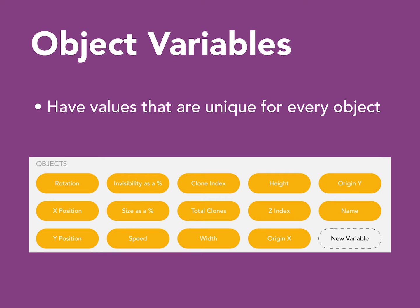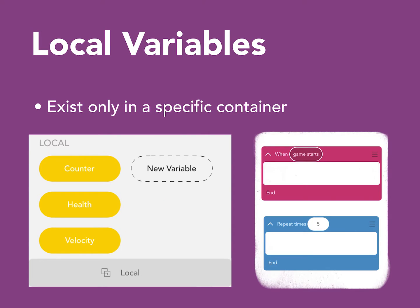Object variables have values that are unique for every object. These include things like x position, y position, size, and so on. Local variables exist only in a container. You can specify which container it exists in by dragging the block where you have declared the variable. We will explore local variables further in the next section.